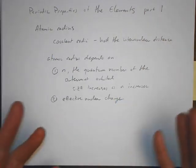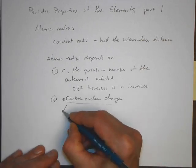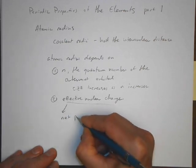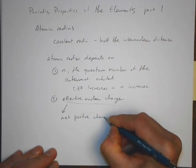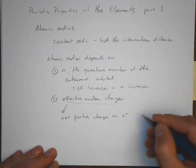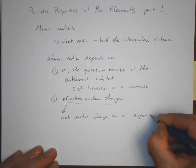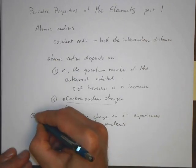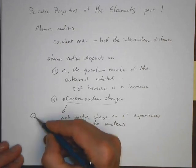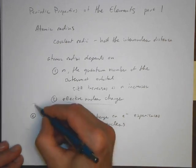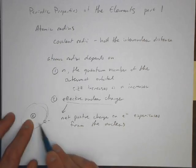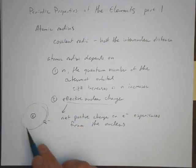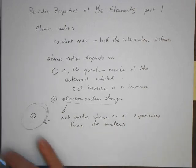Those are the two factors we're going to weigh. Effective nuclear charge is the net positive charge an electron experiences from the nucleus. We have our nucleus — positively charged — and we have our electrons somewhere on the outside. The electron does feel some attraction to the nucleus because they are opposite charges.